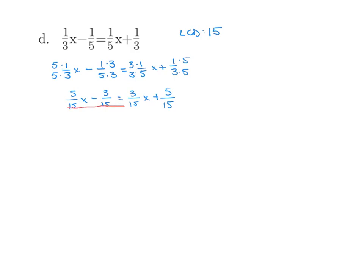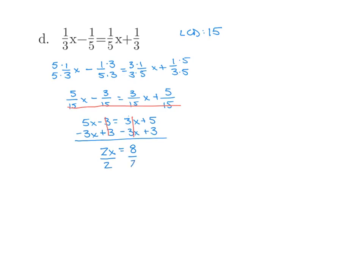We cancel our denominators and are left with 5x minus 3 equals 3x plus 5. Let's go ahead and move our variables to the left — I'm going to subtract 3x — and move our constants to the right by adding 3. We get 2x, my 3's cancel, my 3x's cancel, equals 8. Finally, divide by the coefficient and we get x equals 4.